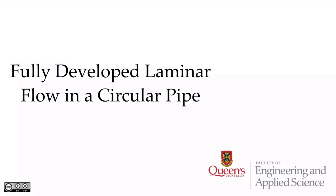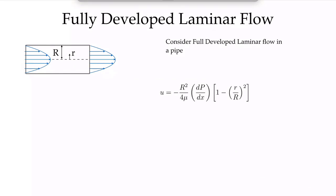In this video, we're going to briefly present the solution for the fully developed laminar flow in a circular pipe. If you recall back in module 3, we solved the Navier-Stokes equations for the laminar flow, pressure-driven laminar flow between parallel plates — our Poiseuille flow example. This is very similar, except we're going to look at fully developed flow in a circular pipe.